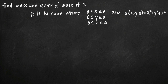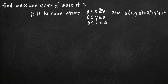Today we're going to be talking about how to find the mass and center of mass of some volume E. In this particular problem, the volume E is the cube where the limits of integration for x are 0 and a, y is between 0 and a, and z is between 0 and a. This tells us that the length of each side of the cube is equal to a, so the cube is a wide by a tall by a long.